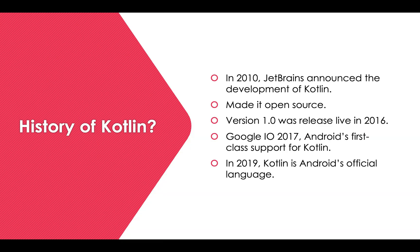Now, the history of Kotlin. This language was announced by JetBrains in 2010 — that's when they started development. They made it open source, so Kotlin is an open-source, statically typed programming language that targets the JVM, Android, JavaScript, and native. It is developed by JetBrains.